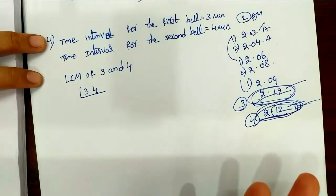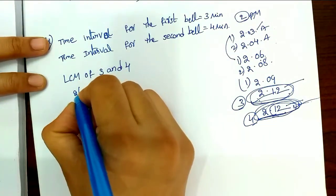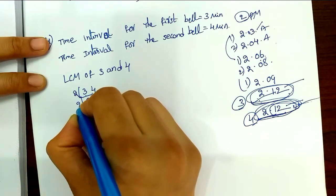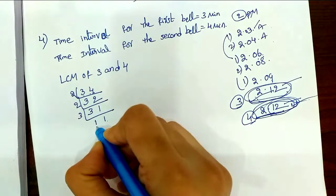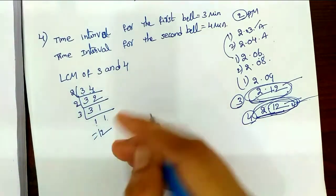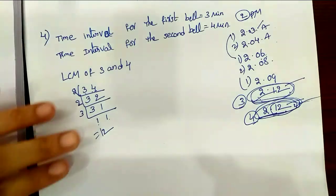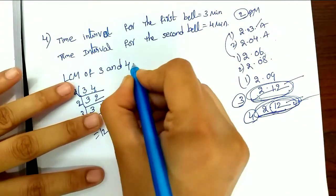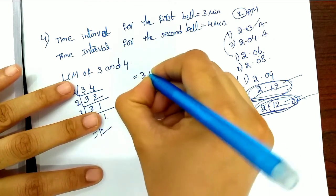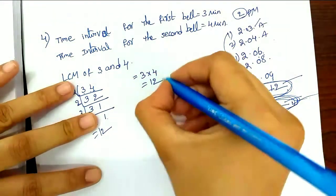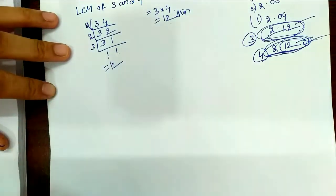LCM of 3 and 4: divide using the table. 2 divides giving 3 and 4; next 3 divides once giving 3; then 1. LCM = 2 × 2 × 3 × 1 = 12.